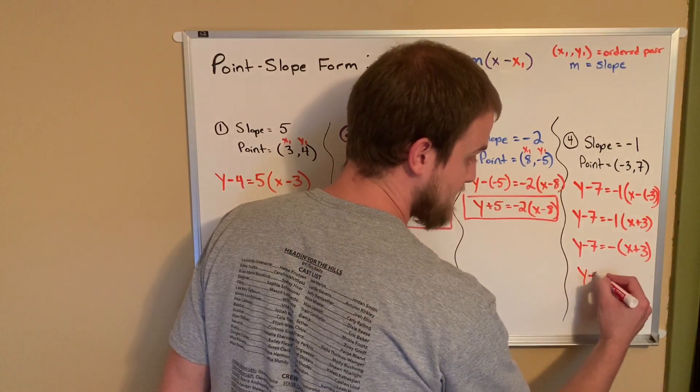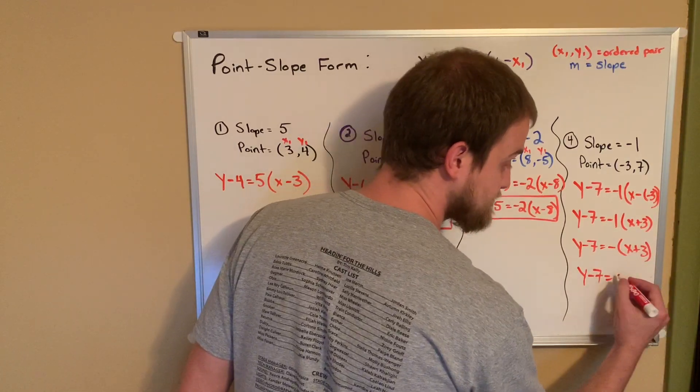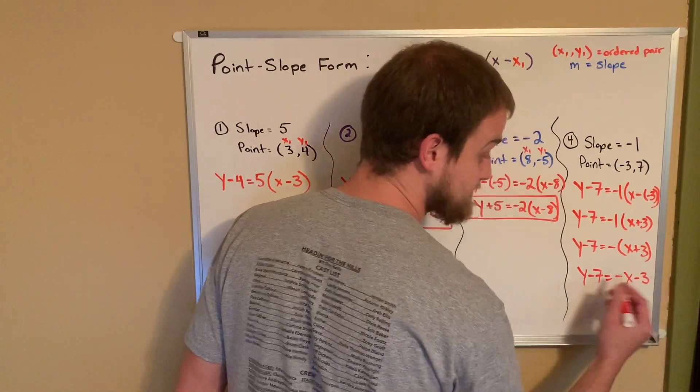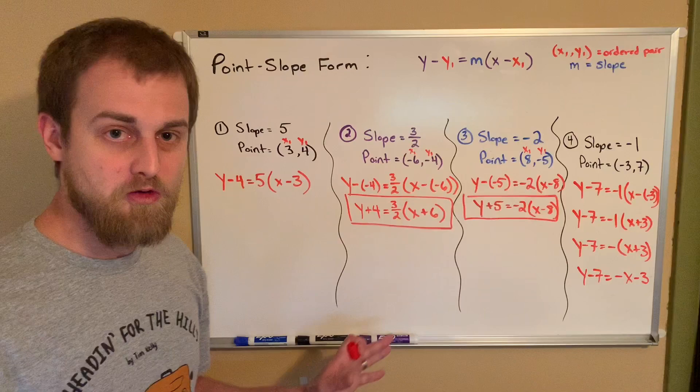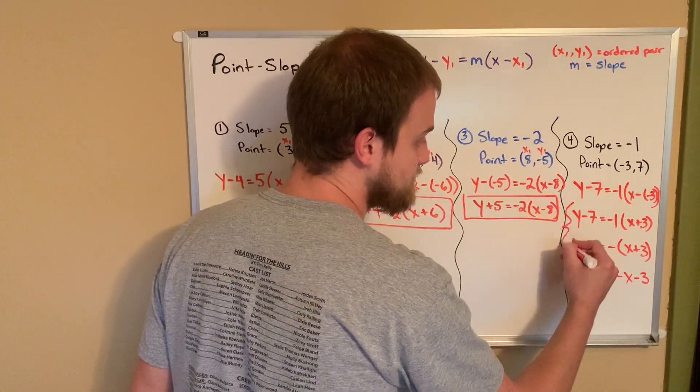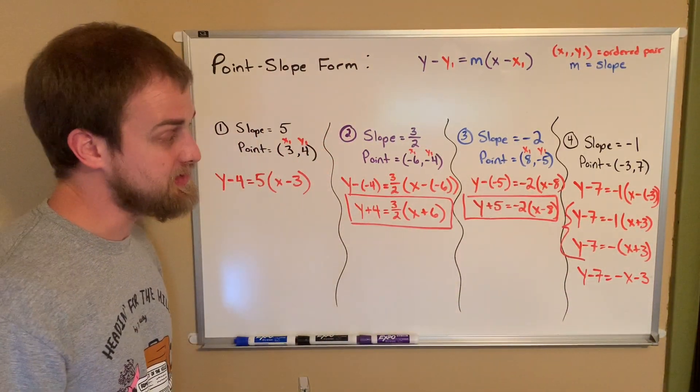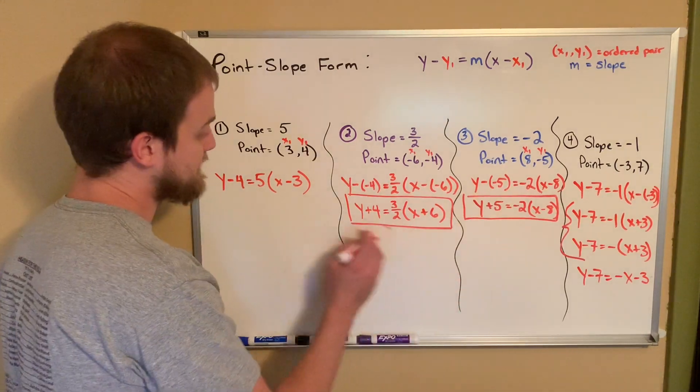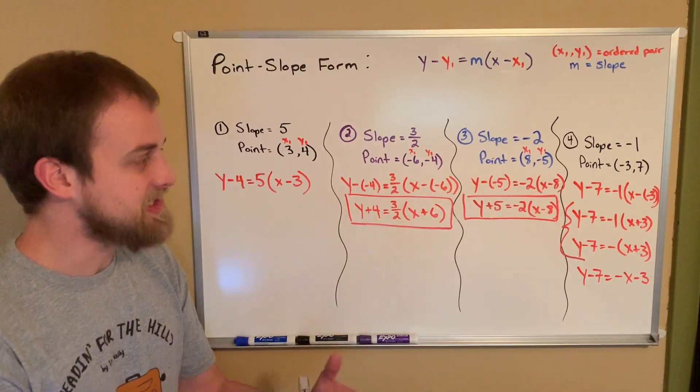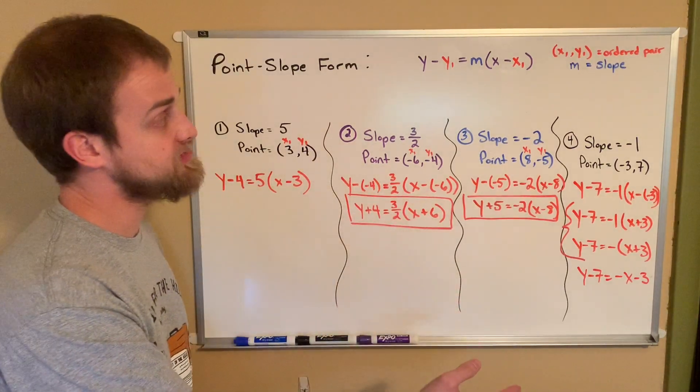You would have y minus 7 equals, and we're going to distribute that negative through. So negative 1 times x would be negative x. Negative 1 times 3 would be negative 3 or minus 3. So again, this kind of breaks the mold of point slope form. But again, some people might take it to that step. I think these two are more appropriate answers for this. However, a possibility of that third would be okay too, I guess. We didn't really do it here, here, here, simply because it wasn't a coefficient of 1, where it just kind of changes things to its opposite.